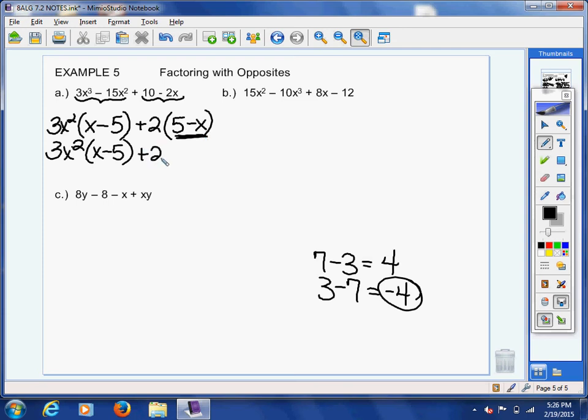Now, when I take the negative 1 out, remember what I just said, positive 5 becomes negative 5, negative x becomes positive x. Now, what happens right here? Well, you just multiply the 2 and the negative 1 together, and you'll have 3x squared times the quantity x minus 5 minus 2 times x minus 5.